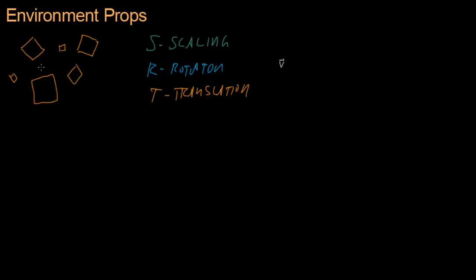When we multiply that V through these matrices it should scale, rotate, and translate the boxes, our environment props. Then all we have to do is come up with some matrix M that does scaling, rotating, and translating of V.